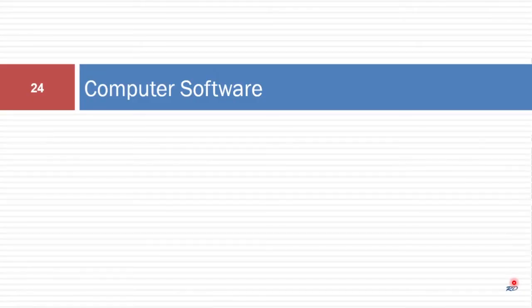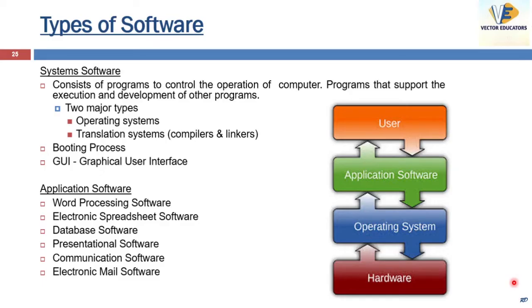Coming to computer software — software can be categorized into two types: system software and application software. System software operates directly on the hardware devices of the computer and provides a platform to run applications. Windows, Linux, Unix, etc. are operating systems which control the computer's hardware, run computer programs, and organize files.